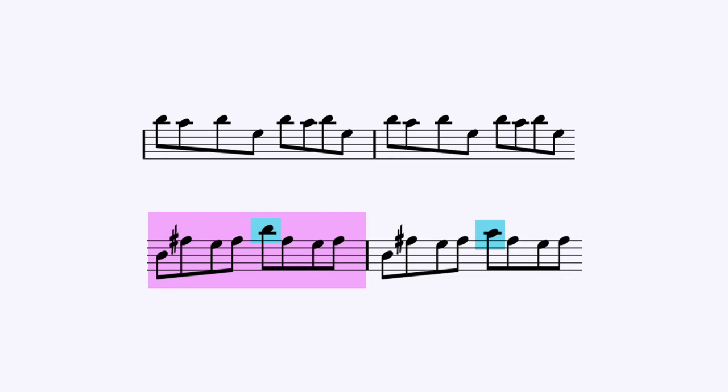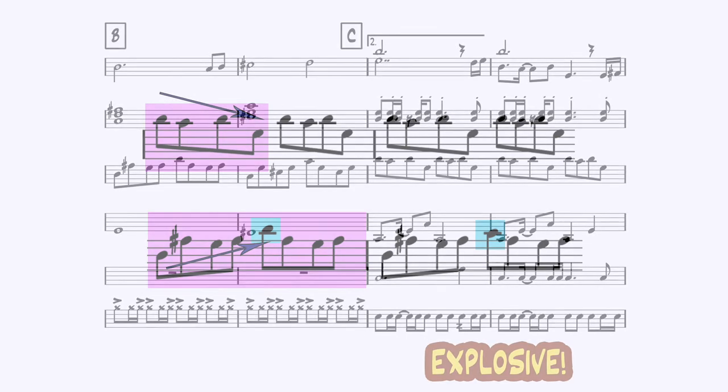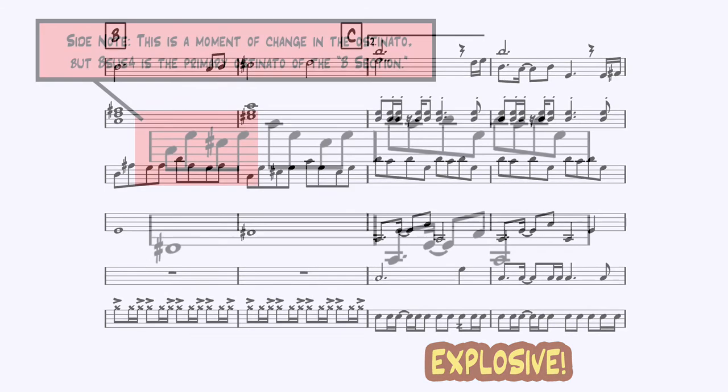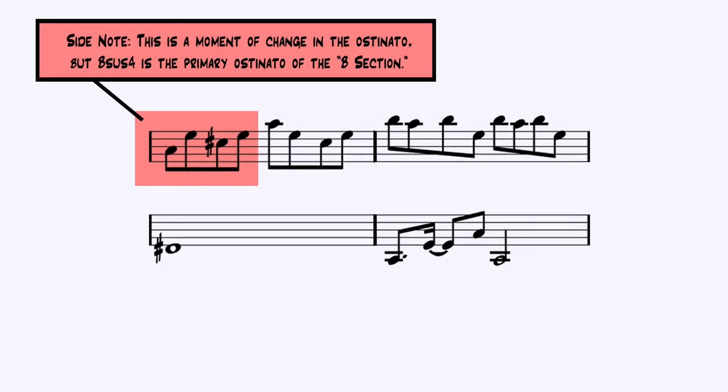One thing we can immediately notice about the E Sus4's implementation is that it is literally unchanged the entire time that we hear it in the C section. Additionally, the B Sus4 pattern lasted an entire measure before the idea could be repeated, whereas we now have a pattern that has been compressed to the length of only half a measure. But what I find most intriguing is how the melodic contour compares. Before we started at the root and worked our way upward, and now we're starting at the fifth and working downward. And as the C section explodes with all this energy, the ostinato also leaps upward to assist. And since we're starting at B, the fifth of the E Sus4, we can hear an octave's difference between the two starting notes of each ostinato.